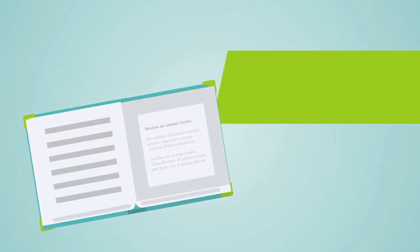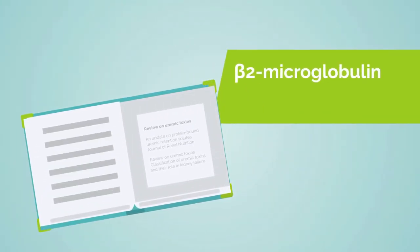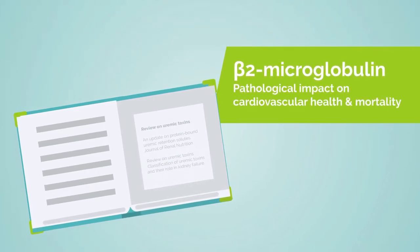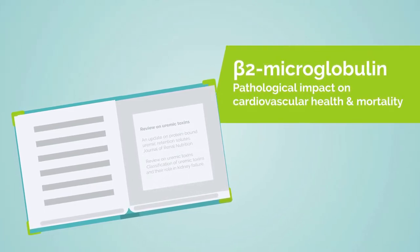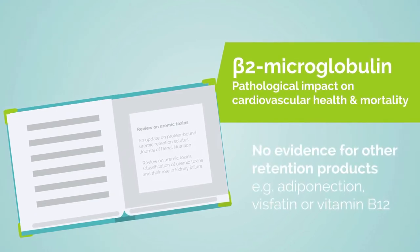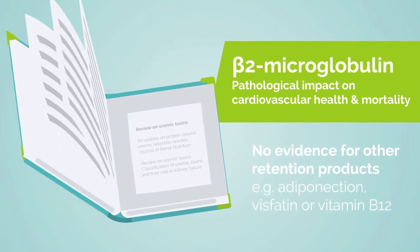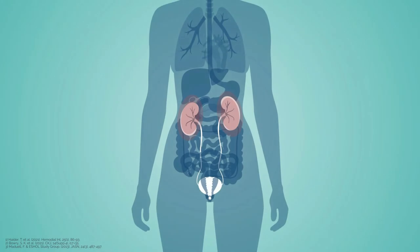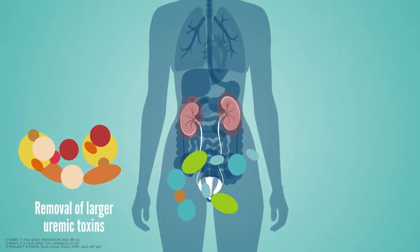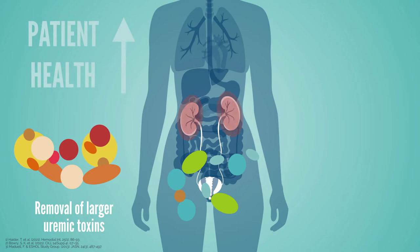Studies on several uremic toxins such as beta-2-microglobulin are associated with cardiovascular health and mortality, while other uremic retention products are lacking such scientific evidence. Some studies demonstrated the removal of larger uremic toxin molecules to be beneficial on patient mortality risk.